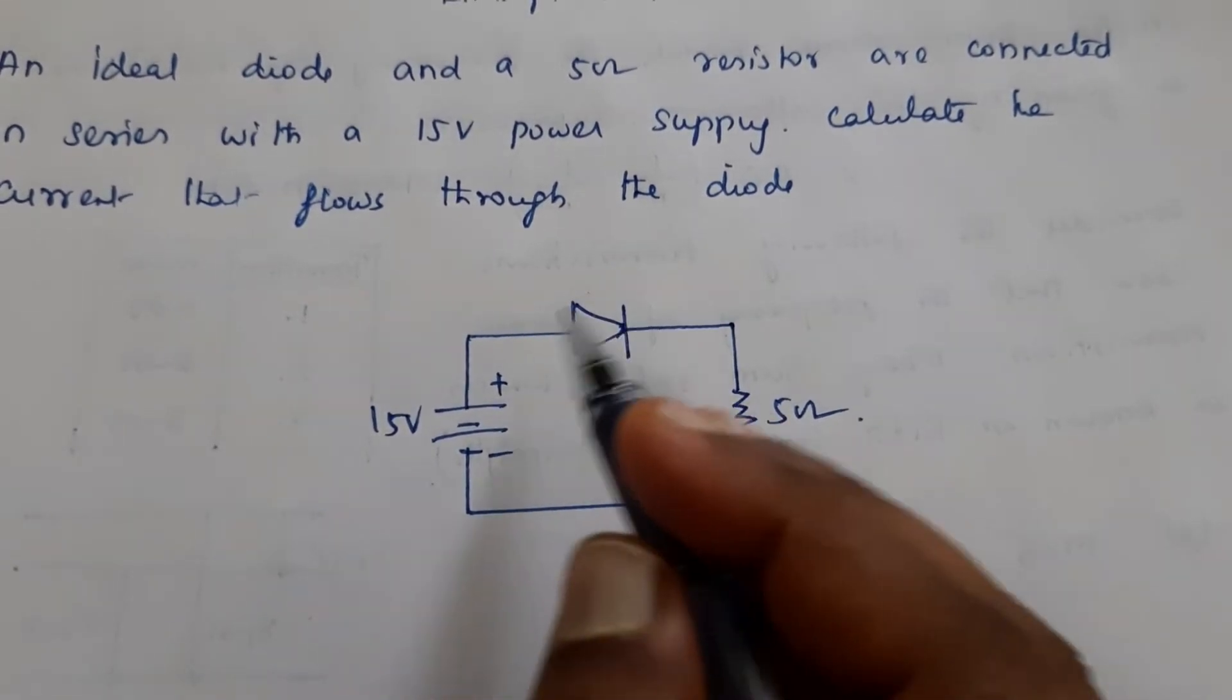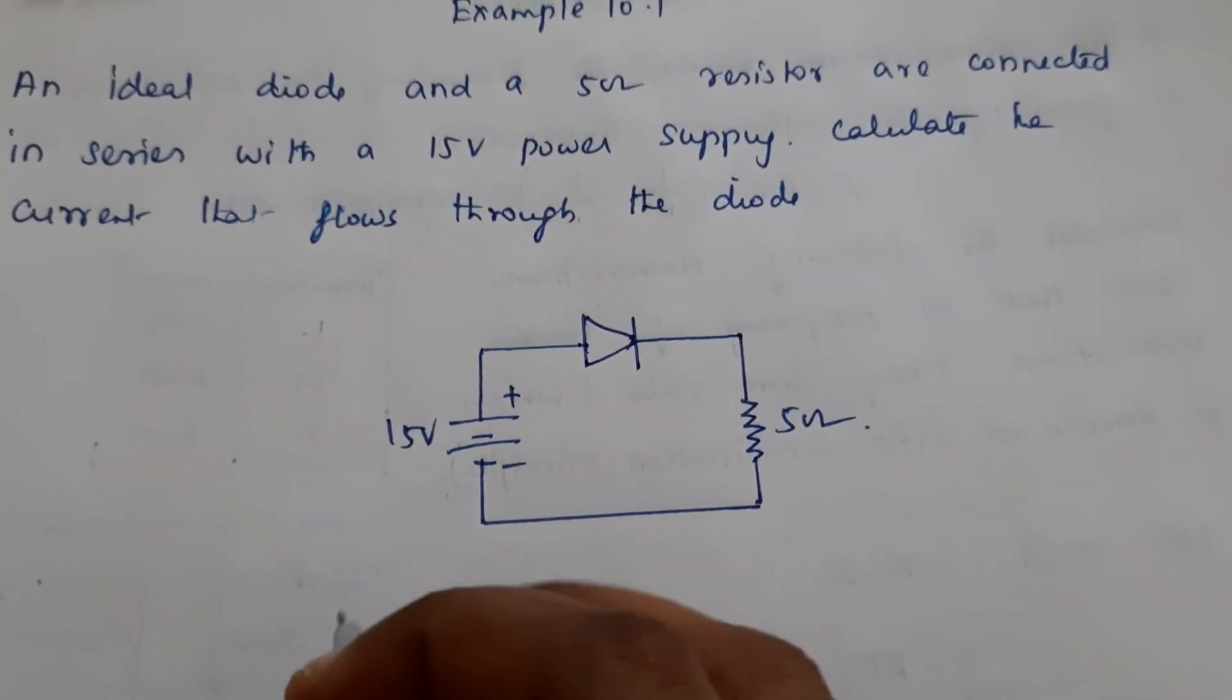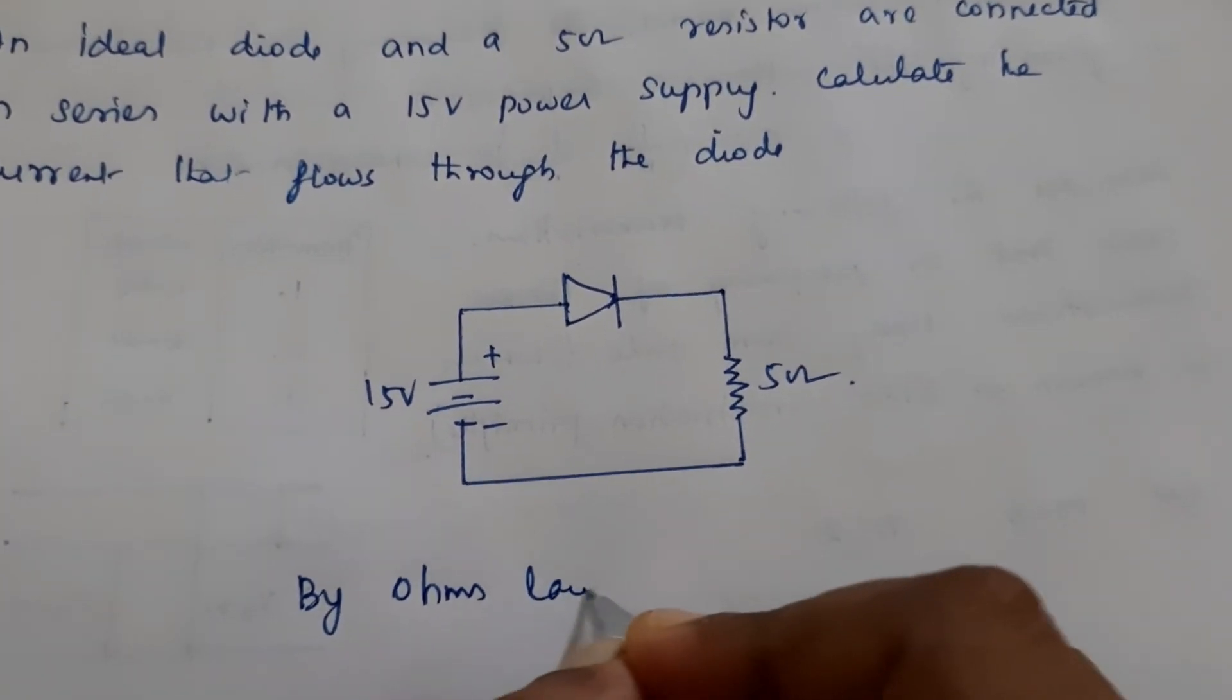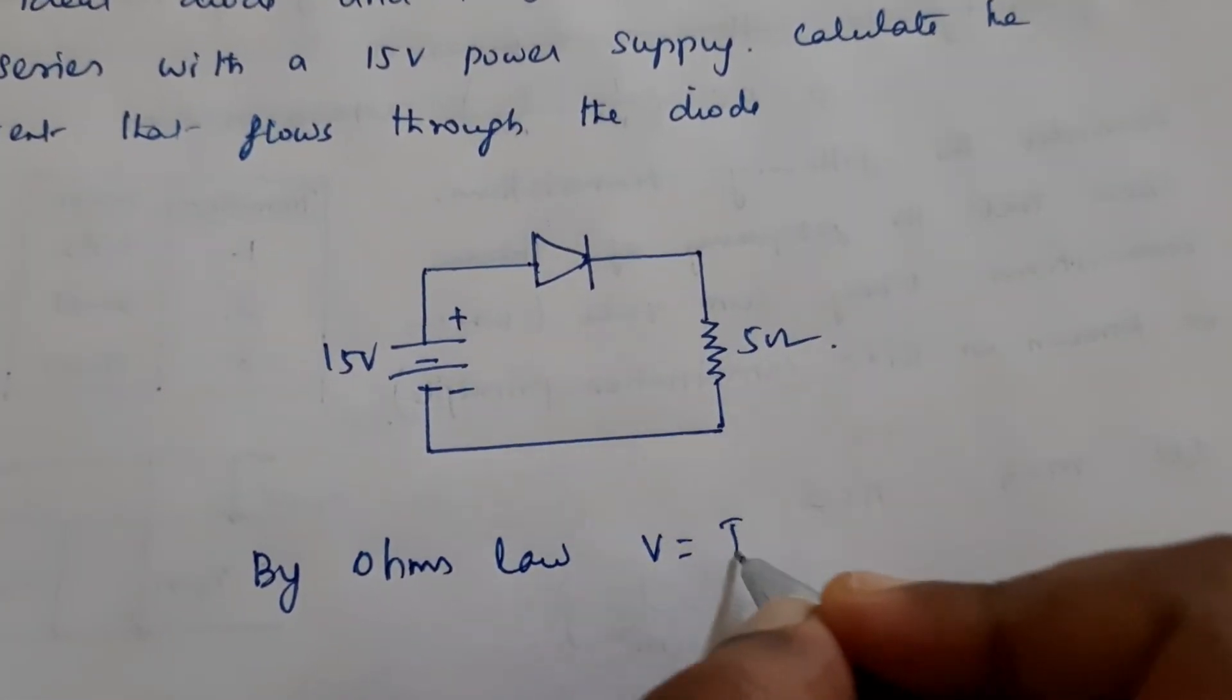In order to find out what is the current flowing through the circuit, we are going to use Ohm's law. By Ohm's law, V is equal to IR.